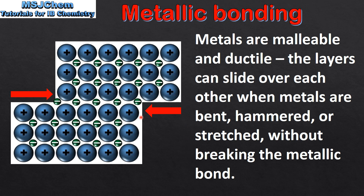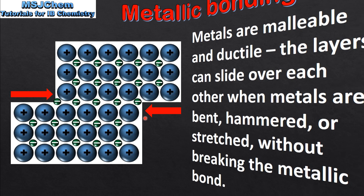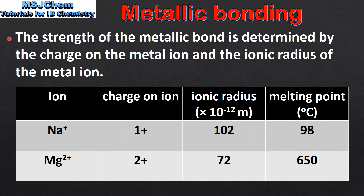In this diagram we can see that the layers in the metallic structure can slide over each other without breaking the metallic bond. This allows metals to be bent, stretched, or hammered into shape. The strength of the metallic bond is determined by the charge on the metal ion and the ionic radius of the metal ion.